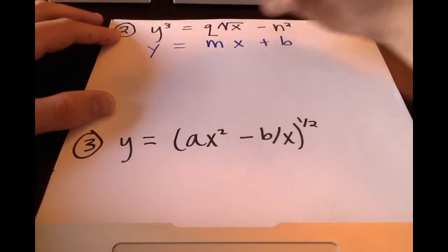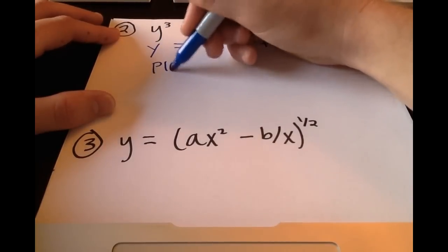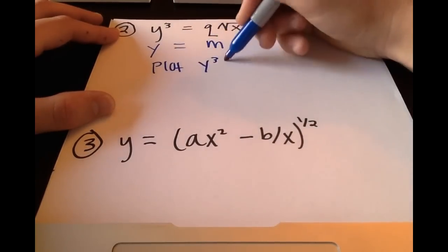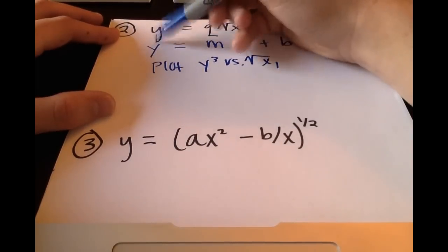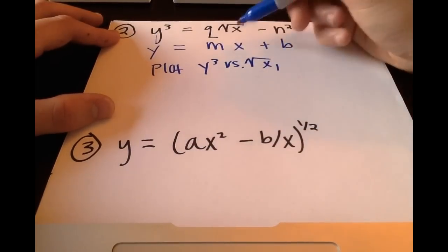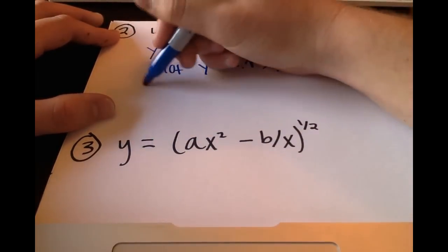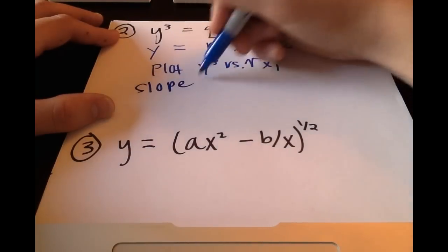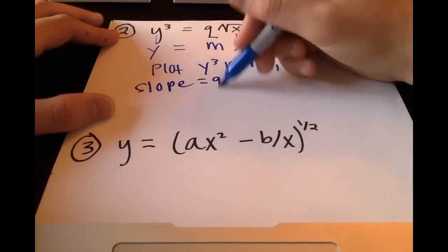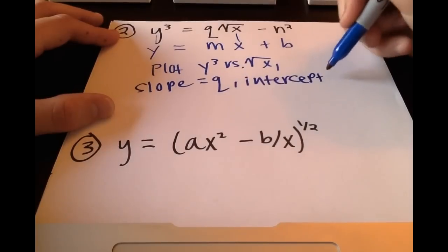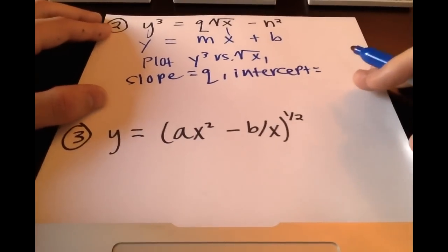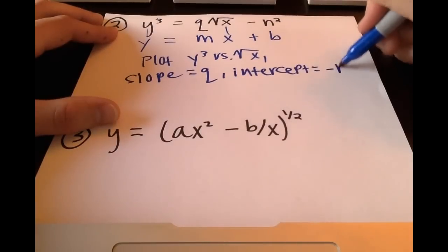In this case, correlating the values, we would plot y³ versus √x. You can see that correlation there and there. Our slope would be q and our intercept would be -n².